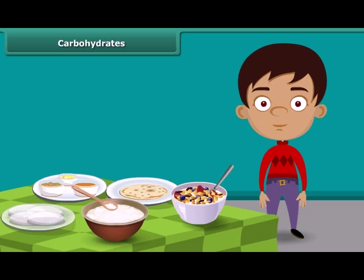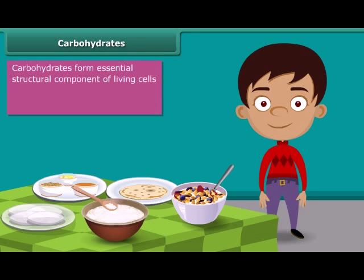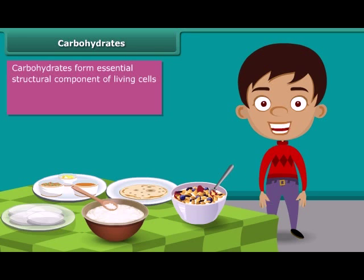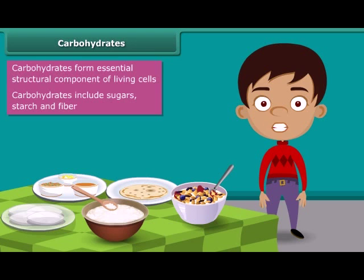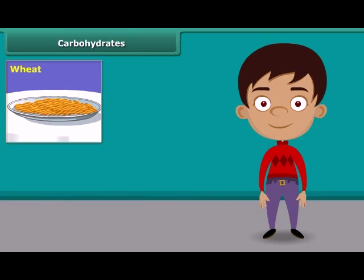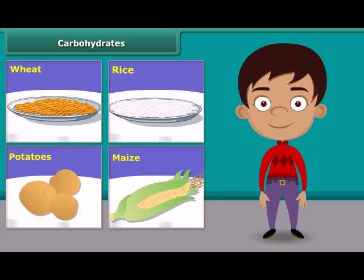First, carbohydrates. Carbohydrates form an essential structural component of living cells. They are the main source of energy for animals. Carbohydrates include sugars, starch, fiber, etc. They are mainly found in wheat, rice, potatoes, corn and maize.